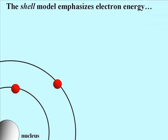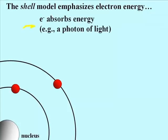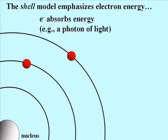Look at the shell model of an atom. When an electron absorbs a photon of light, as shown here, or an equivalent amount of electrical or any other kind of energy, the electron becomes excited and jumps to the next higher shell, next higher energy level.